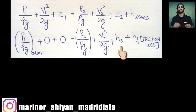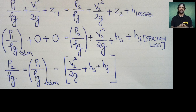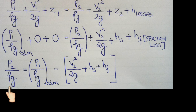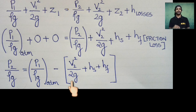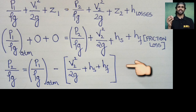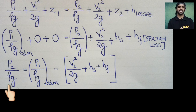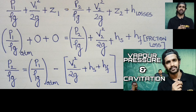The full equation becomes: P1/ρg + 0 + 0 = P2/ρg + V2²/2g + Hs + friction loss. Now we solve for the pressure at the eye of the impeller: P2/ρg = P1/ρg (atmospheric pressure) minus the bracketed terms. Therefore, the pressure at the eye of the impeller, P2/ρg, will always be less than atmospheric pressure.